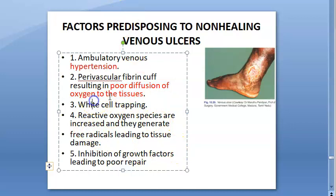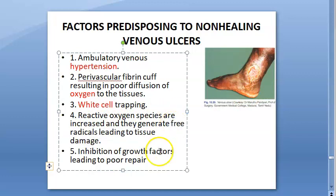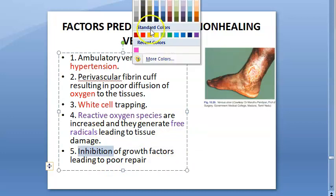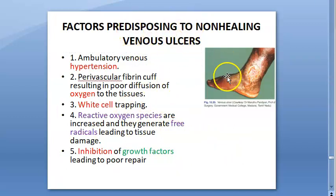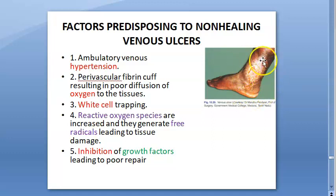So oxygen is less for these people. There is also white cell trapping — reactive oxygen species are increased and they generate free radicals leading to tissue damage. Additionally, there is inhibition of growth factors leading to poor repair. So why are these ulcers not healing? Venous hypertension, white cell trapping, less oxygen, free radicals causing tissue damage, and inhibition of growth factors.